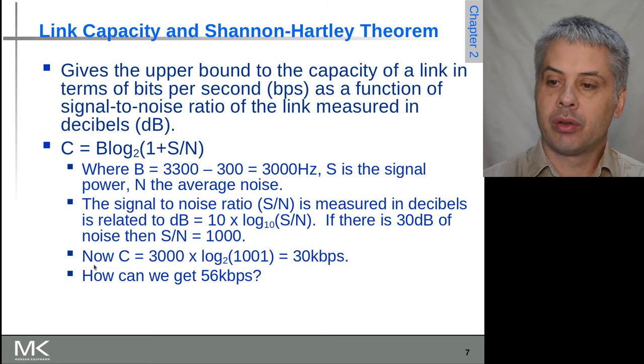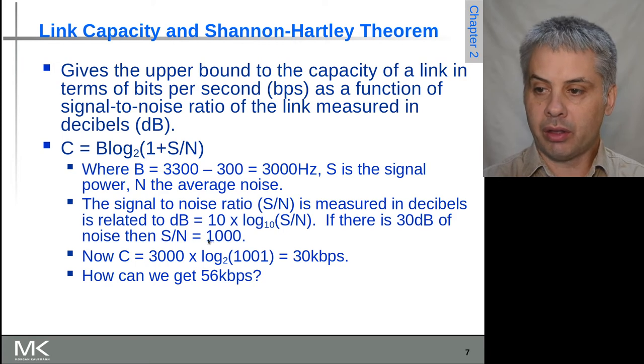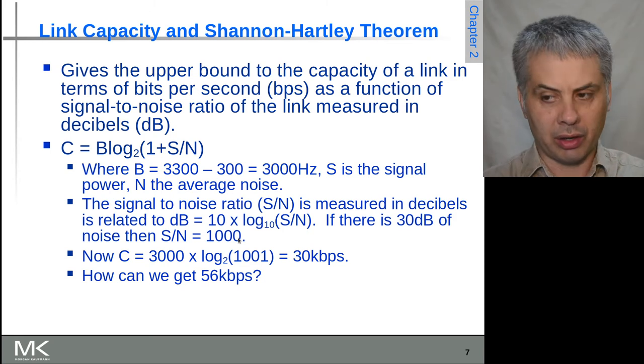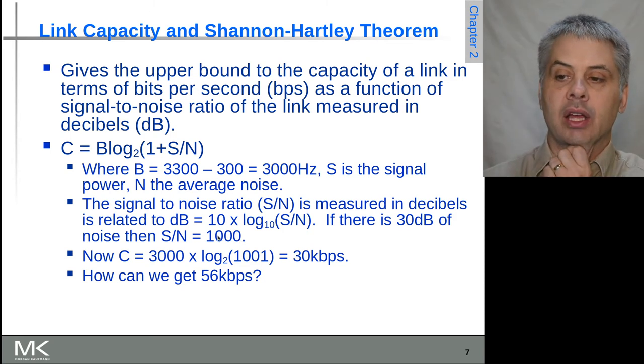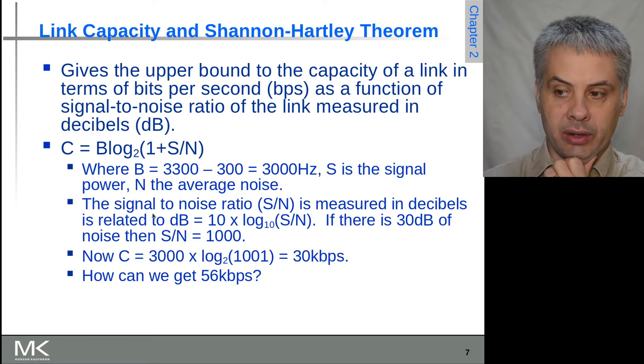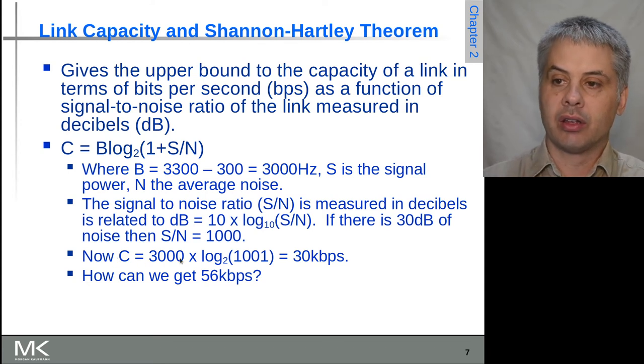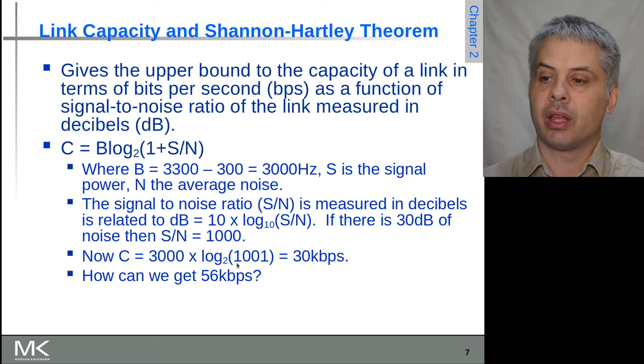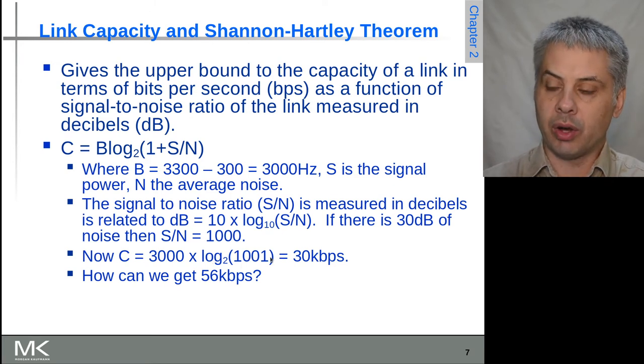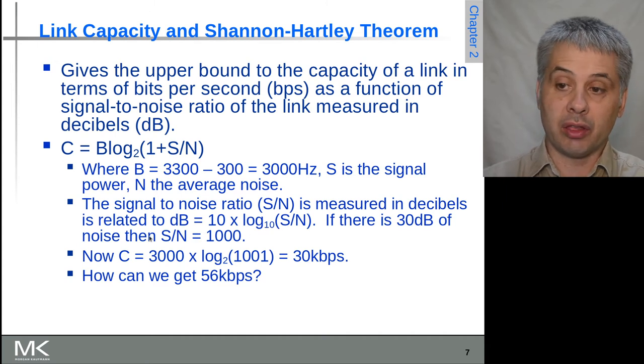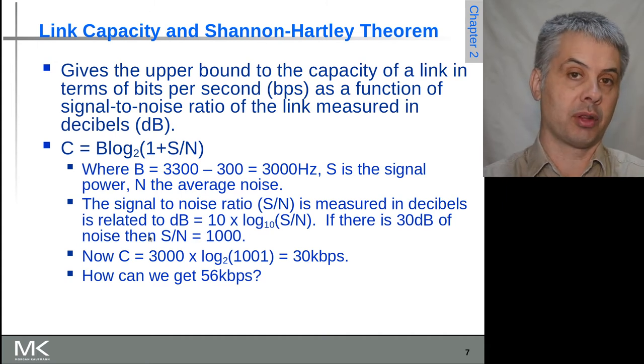Let's have a look at this example. If we say that we have a signal to noise ratio of 1000 (so the signal is 1000 times larger than the background noise) and we have a bandwidth of 3 kilohertz, this will give us a channel capacity of 3000 Hz times the log base-2 of 1001, which gives us roughly 30 kilobits per second.